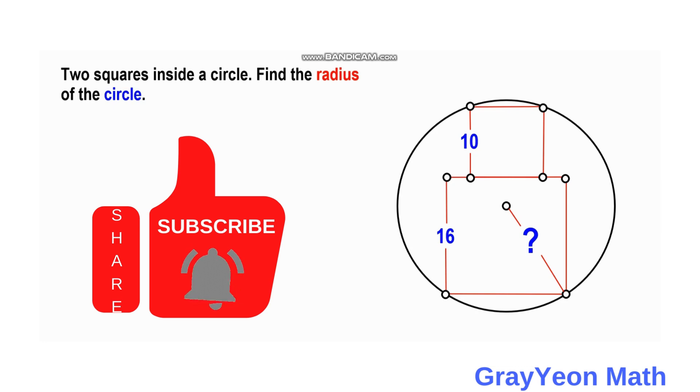We have two squares inside this circle. The squares measure 10 units for the smaller square and 16 units for the side of the bigger square. These two squares both intersect the vertices of the circle, and we are required to find the radius of the circle.